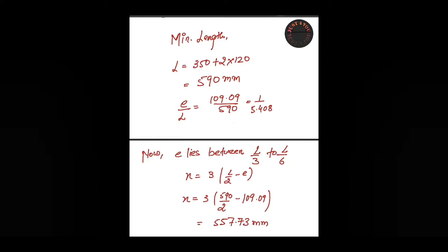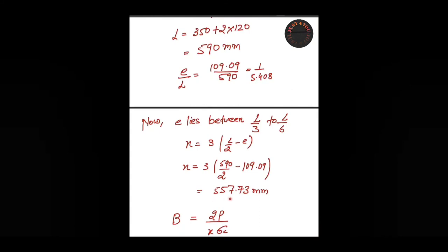In Case 2, the first step is to find the value of x using the equation 3l/2 minus e. Putting the values - length l = 590 mm and e = 109.09 mm - we get x = 557.73 mm.